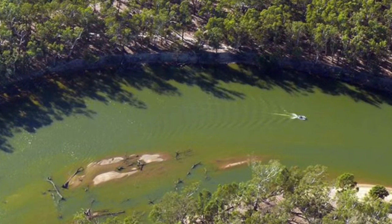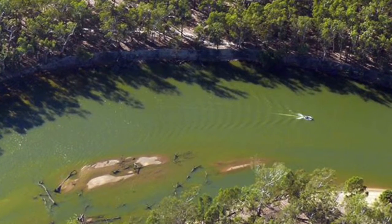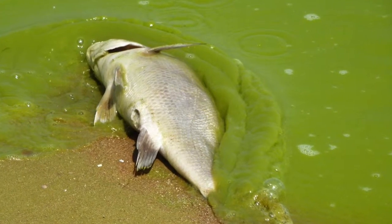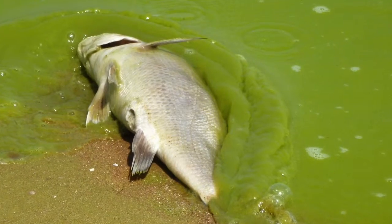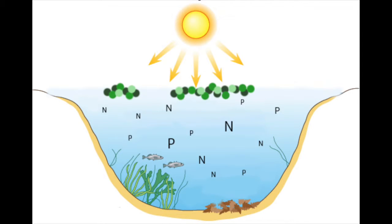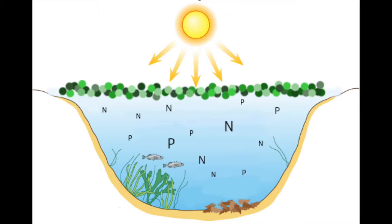Water eutrophication is a serious environmental issue as it often results in the growth of algal blooms, which have many negative effects on the ecosystems involved. As the concentrations of nitrogen and phosphorus increase in the basin, this creates optimal conditions for phytoplankton, a species of photosynthetic algae. This begins to grow rapidly and results in a thick layer of green algae which covers the surface of the water. This event of eutrophication is known as an algal bloom.